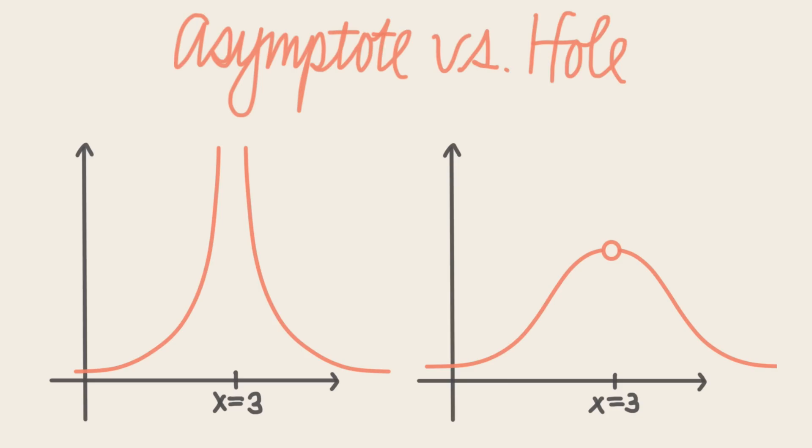Another question you may have when you're dealing with asymptotes is how they're different from holes or removable discontinuities. Both are places on the function where the graph is discontinuous, right? Well, let's take a look.